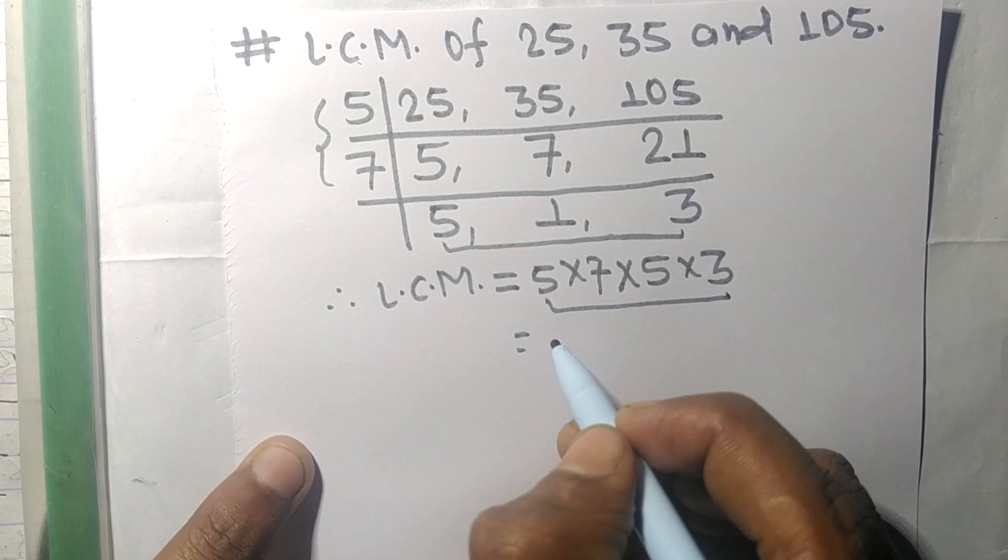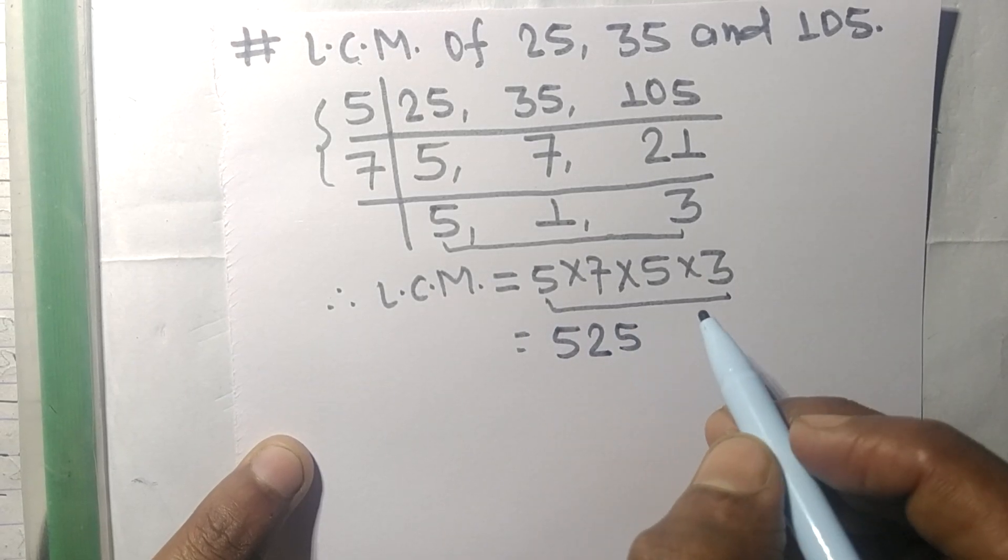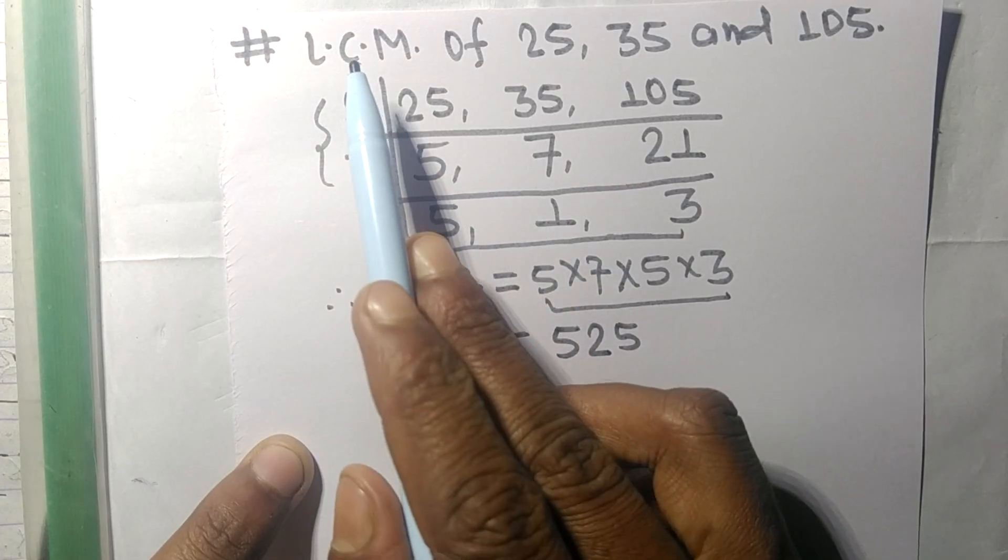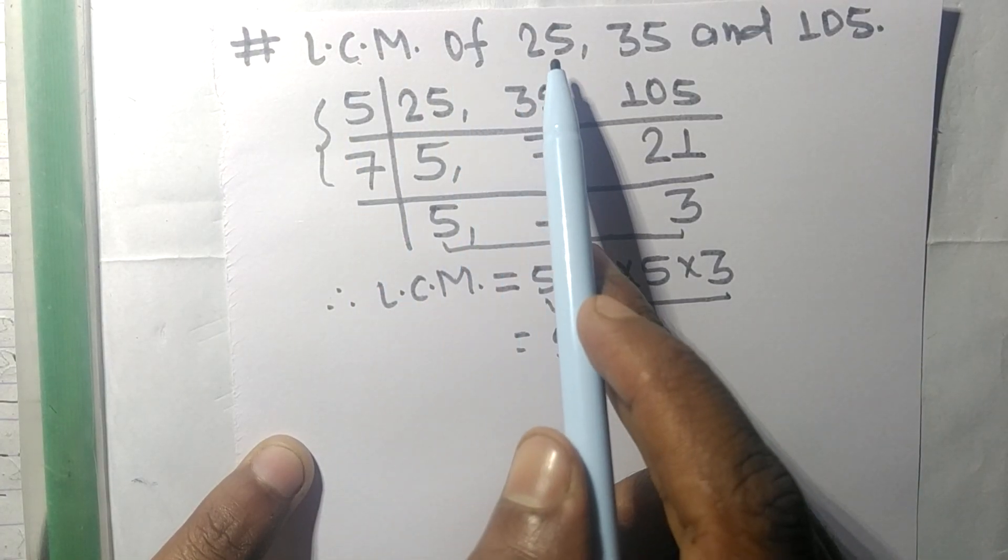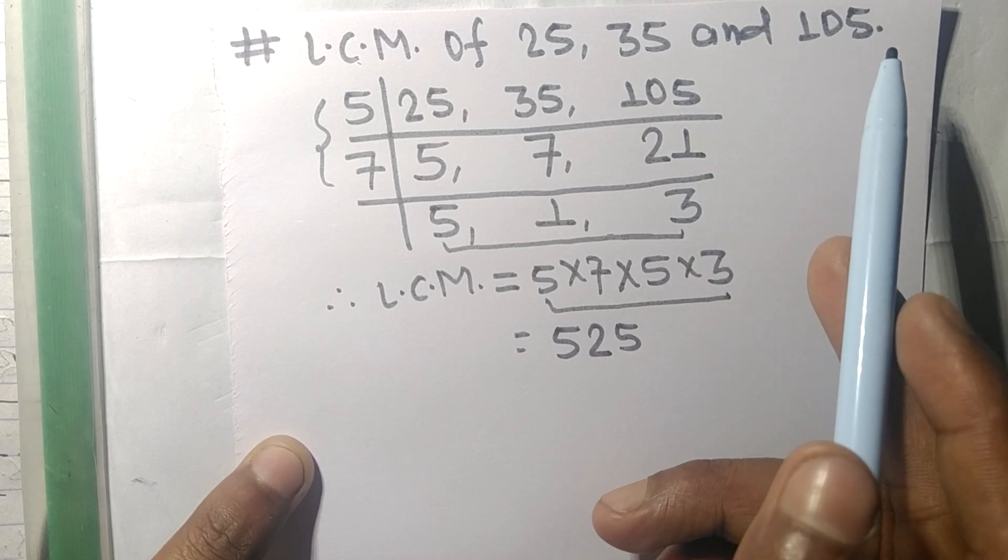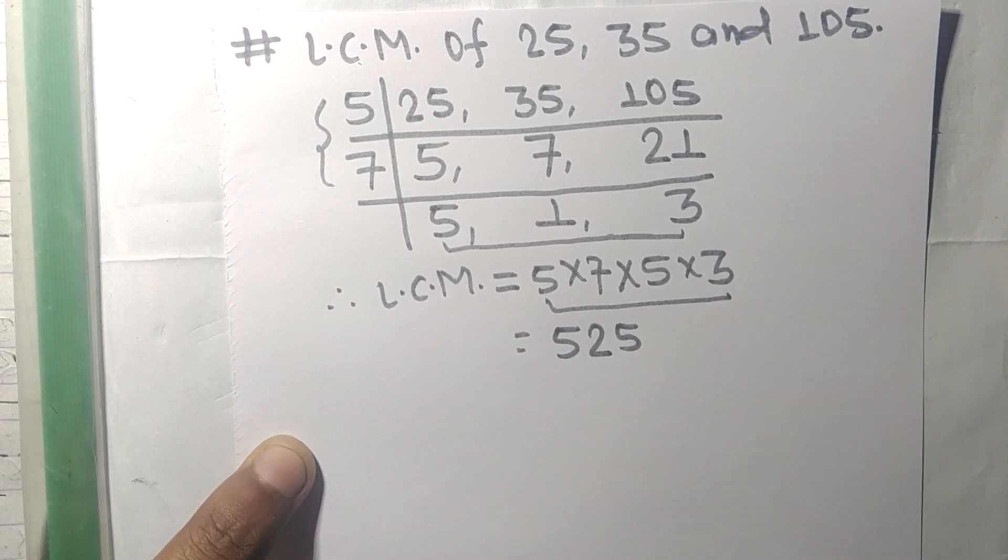we get 525. So 525 is the LCM of 25, 35, and 105. So this much for today, and thanks for watching.